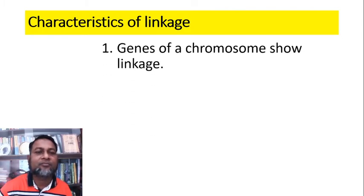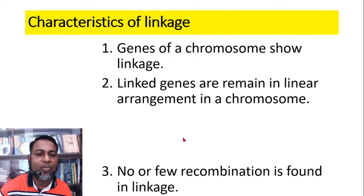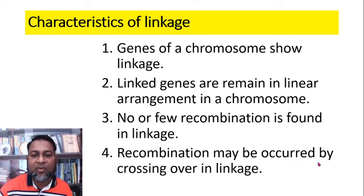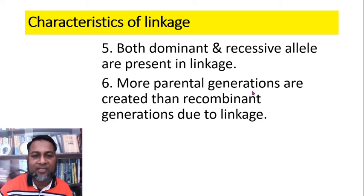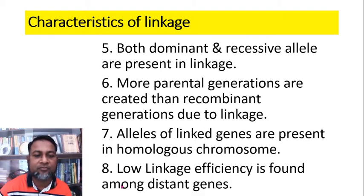Characteristics of linkage: Genes of a chromosome show linkage, and linkage is found in the same chromosome. Linked genes remain in linear arrangement in a chromosome. No or few recombinations are found in linkage. Recombination may occur by crossing over. Both dominant and recessive alleles are present in linkage. More parental generations are created than recombinant generations due to linkage. Alleles of linked genes are present in homologous chromosomes, and low linkage efficiency is found among distant genes.